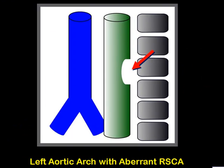Schematically, the aberrant right subclavian artery passes posterior to both the esophagus, shown in green in these diagrams, and the trachea in blue. I don't wish to imply by the sharp angles of this depiction that this produces an intraluminal defect in the esophagus — it's an extrinsic compression.